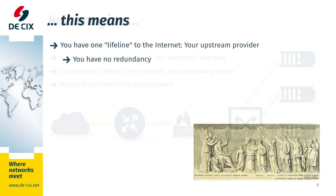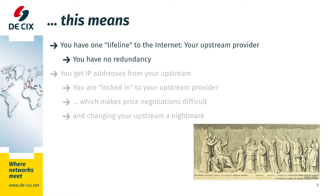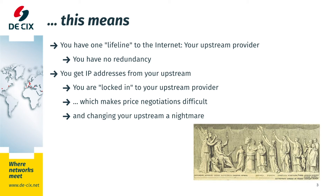With only one lifeline to the internet, you have no redundancy. And with the IP addresses you are using also coming from that upstream provider, it means that you are locked into that upstream provider. Price negotiations are difficult because your upstream knows the position you're in. And if you do want to change your upstream, it's a nightmare because you have to renumber every device with a public IP address.